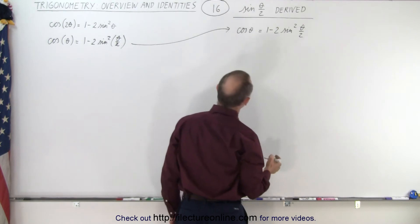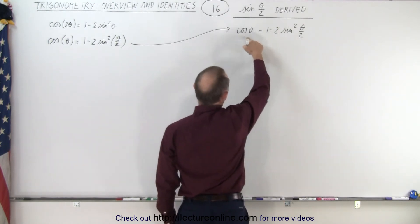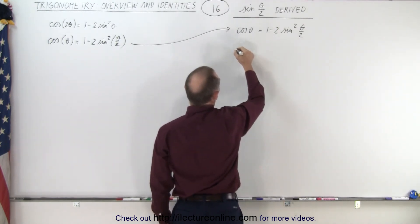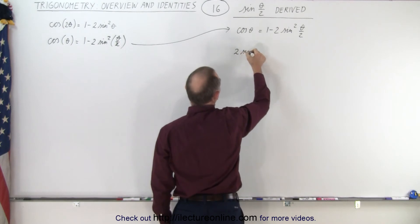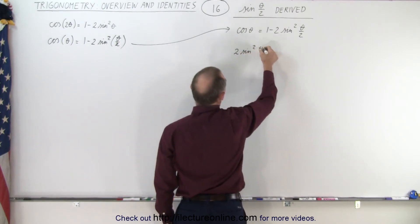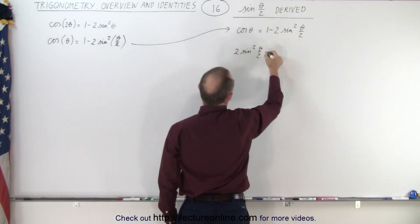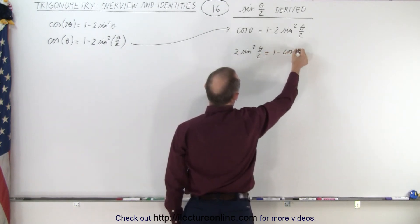So what we're going to do is we're going to move this to the left side and that to the right side. So here we get a positive 2 times the sine squared of theta over 2 because we went across equal sign that becomes positive. That's equal to 1 minus the cosine of theta.